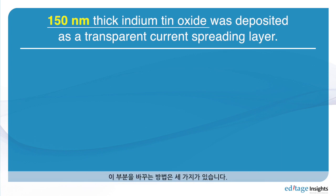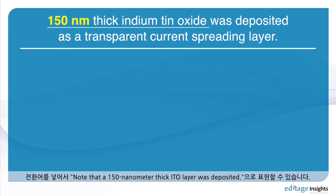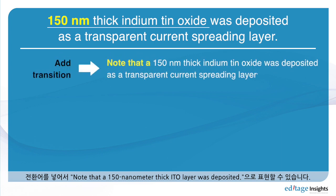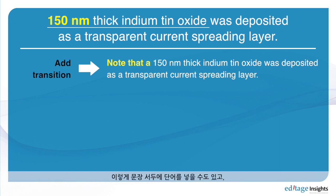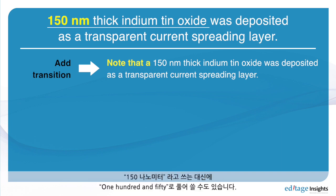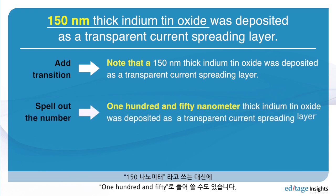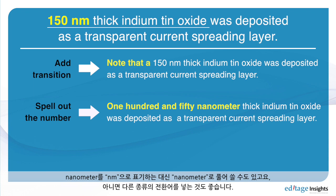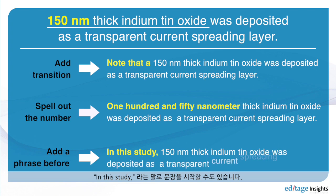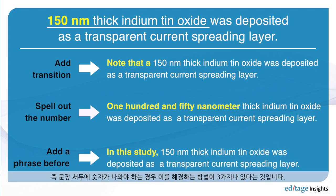There are three ways that you can change this. First, you can add a transition: 'Note that a 150 nanometer thick ITO layer was deposited.' Second, you can write out the full term instead of the abbreviation. Third, you can use a different type of transition, such as 'In this study,' at the beginning of the sentence. These are three ways to overcome starting the subject with a number.